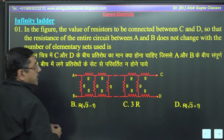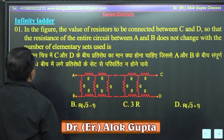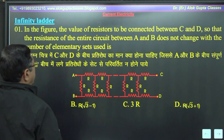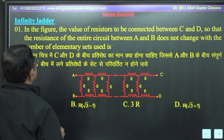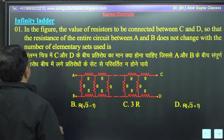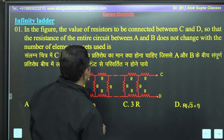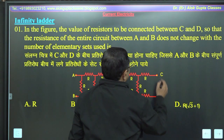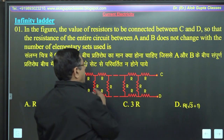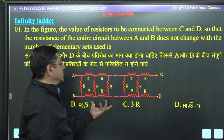Now, questions on infinity ladder — infinite ladder के कुछ questions देखते हैं। In the figure, the value of the resistors to be connected between C and D, so that the resistance of the entire circuit between A and B does not change with the number of elementary sets used. C और D के बीच में resistances जोड़ने हैं ताकि इसकी value same रहे — कितने भी resistance जोड़ सकते हैं, इसका मतलब infinity ladder पे चला गया यह question।